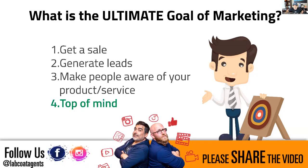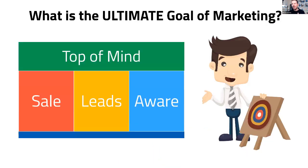Top of mind awareness — it's the holy grail, the ultimate goal. Someone mentioned omnipresence, and that's exactly it. I saw some people put branding. The reason top of mind is the ultimate goal is that if you're top of mind, everything else just comes much easier. If you have top of mind awareness, the sale comes easier, leads come easier, awareness comes easier — it kind of feeds everything else you're trying to drive.